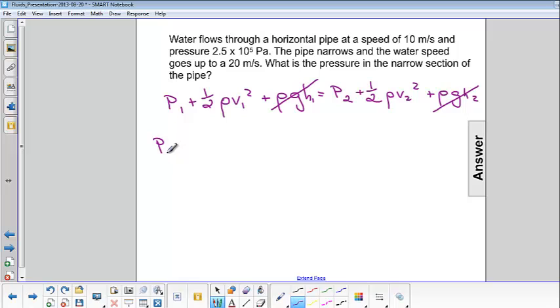So we're left with p1 plus 1 half rho v1 squared equals p2 plus 1 half rho v2 squared. And we're looking for the pressure in the second part of the pipe, so we're going to have to subtract 1 half rho v2 squared from both sides.